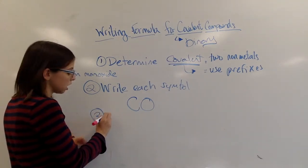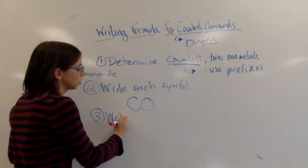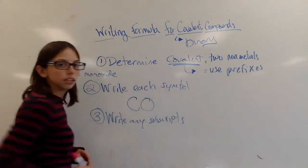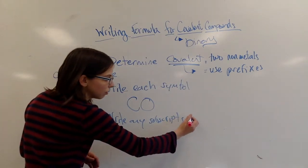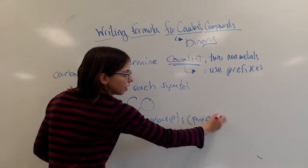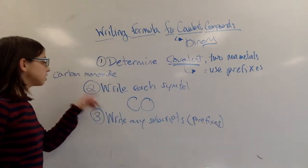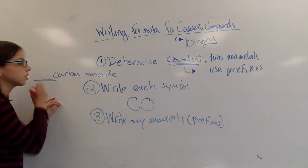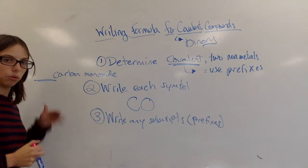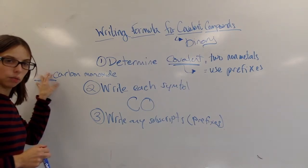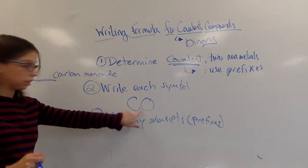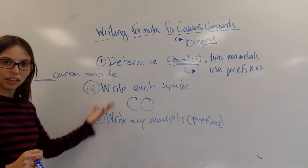All right. Our third step, you would write down any subscripts that you need, and you figure those out based on your prefixes, what prefixes are there. So in this example, carbon monoxide, there's no prefix in front of carbon, so we can assume there's only one of them. That's one of those exceptions to the rule. You don't have to put the mono first if there's only one for the first element. So a one would stay here. I don't have to write out a one. That's unnecessary. Writing the letter is enough.